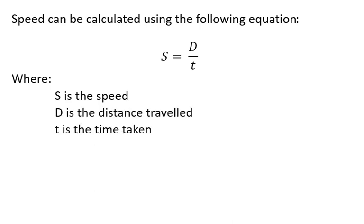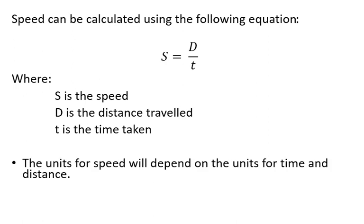The only thing we have to be careful of here is the units for distance and time. The unit for speed will depend on those. For instance, if distance is measured in meters and we divide it by time in seconds, then our units will be meters per second.